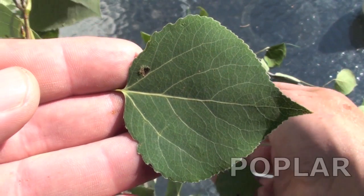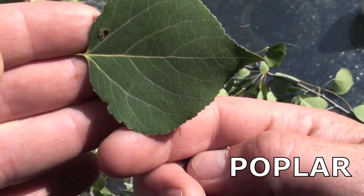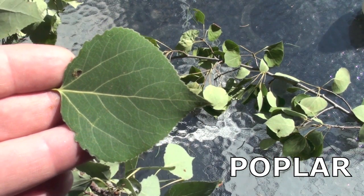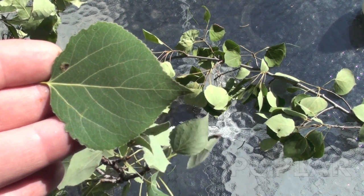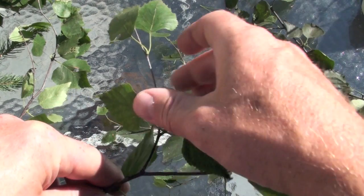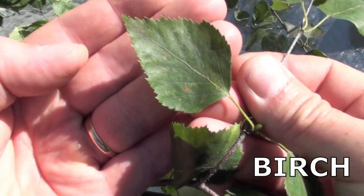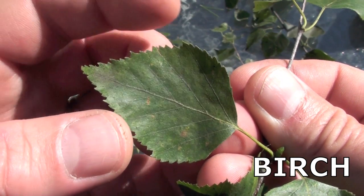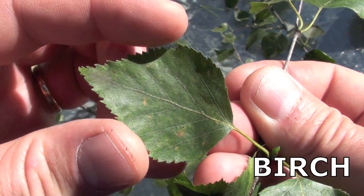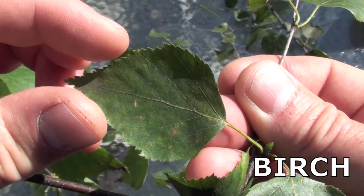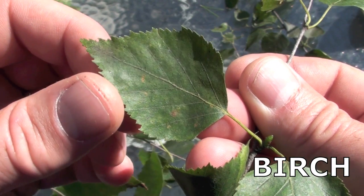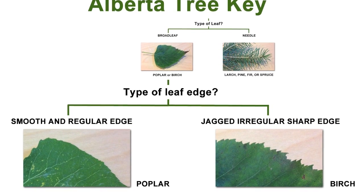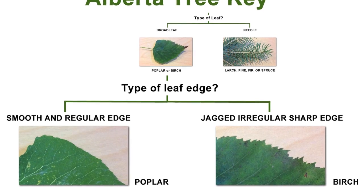When we take a close look at poplar leaves, they look green and pretty much have a standard leaf shape. But if we look closely at the edge of the poplar leaf, we can see that it is very regular and smooth. Now let's take a close look at birch leaves. Again the leaves look green with a standard leaf shape, but looking very closely at the edge, we can see that birch leaves have a very irregular edge with sharp and jagged points.